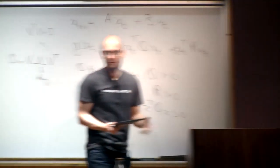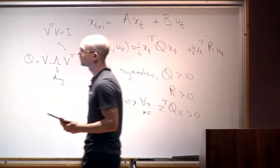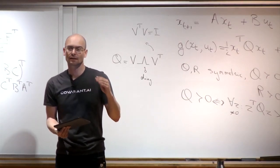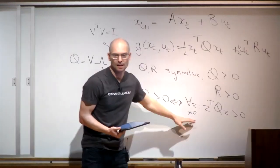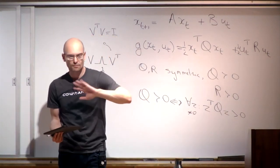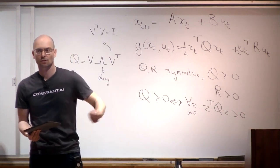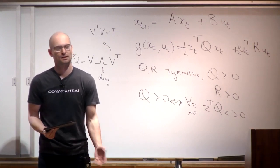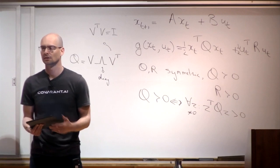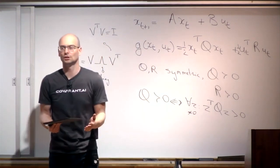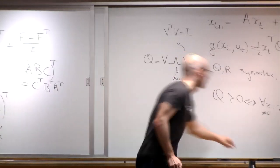Positive definiteness is needed because we're minimizing cost. If there's any direction Z in which the quadratic is negative, you'd want to send the state to infinity in that direction to get a very negative cost — that's not an interesting problem to solve. So positive definiteness ensures a clear, meaningful goal.